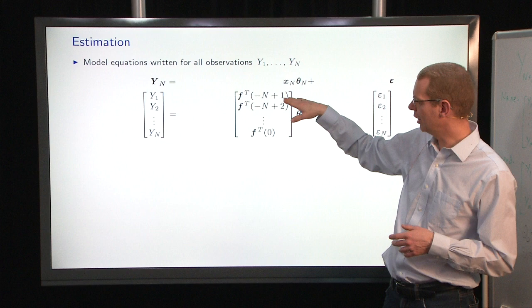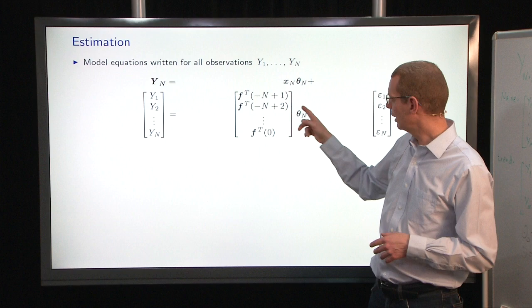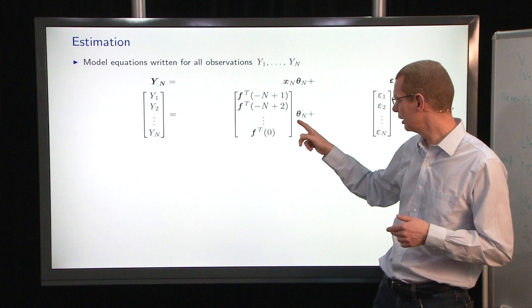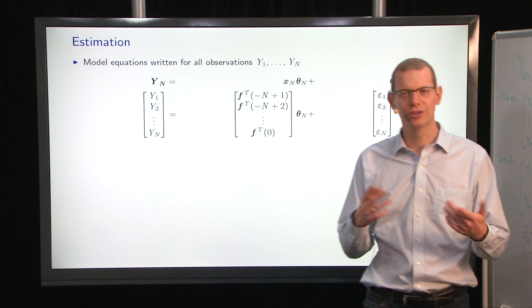And again, we have some observations. We have rows here of the F relative to the most recent observation, instead of backwards in time. Then we're going to make an estimate of theta at each time point, so we want to estimate theta n when we have n observations, and then we have the residuals out here. So that's the same old story you can say.